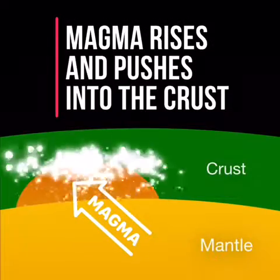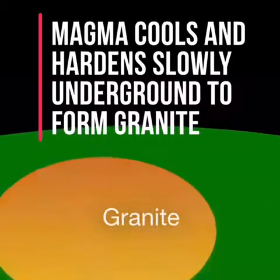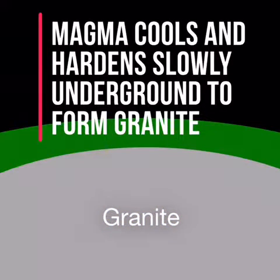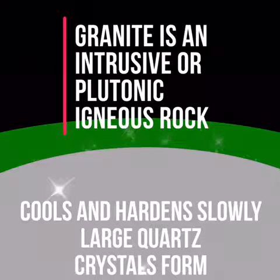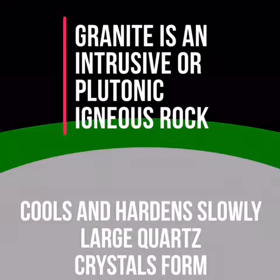The rock cycle begins when magma in the mantle rises and pushes into the crust. This magma cools and hardens slowly underground to form granite. This allows large quartz crystals to form. Granite is an intrusive or plutonic igneous rock.